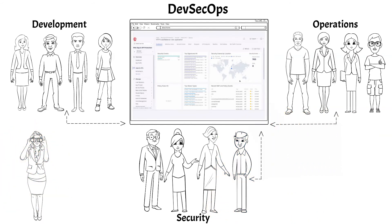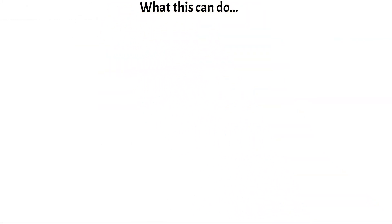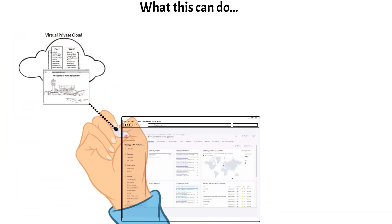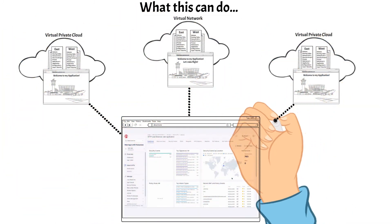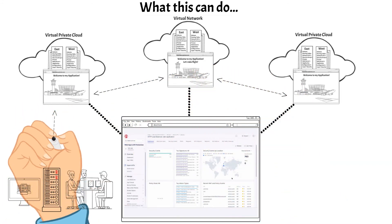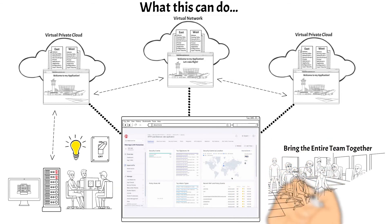This provides visibility and collaboration that can bring the entire team together while still allowing each team to focus on their primary function. What this can do for you and your organization is provide a consistent console for networking and application configurations across clouds, ease of connectivity between clouds and on-prem data centers, speed, and team collaboration by using a simple approach.